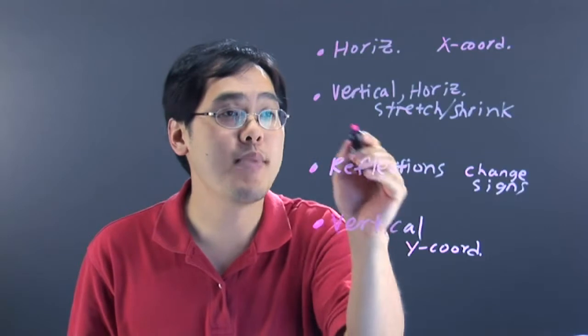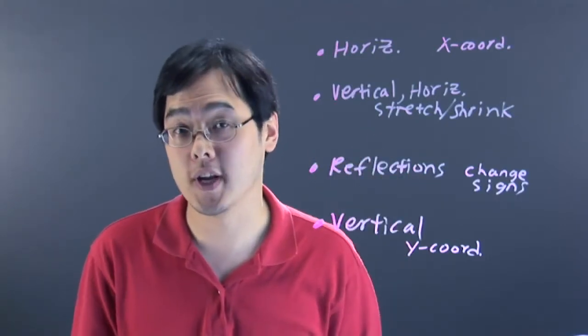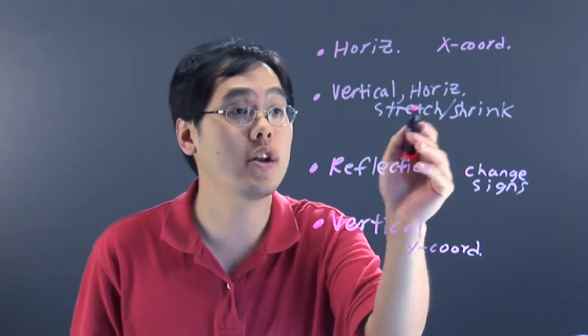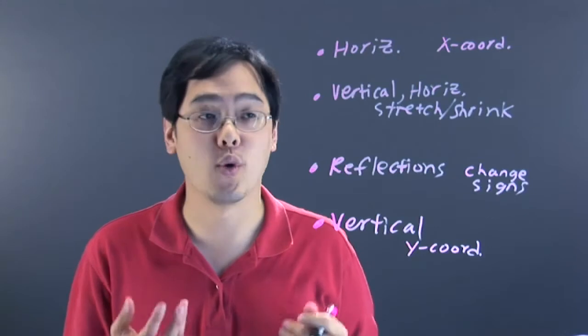Where this impacts things is: if it's a vertical stretch or shrink, the y coordinates are multiplied or divided depending on the situation. If it's a horizontal stretch or shrink, the x coordinates are either multiplied or divided.